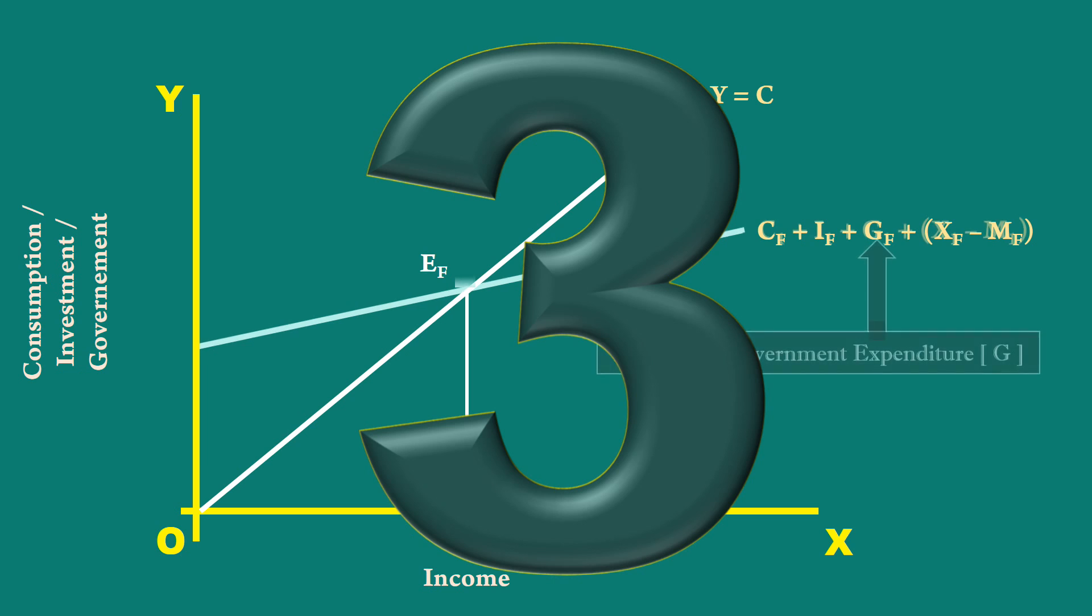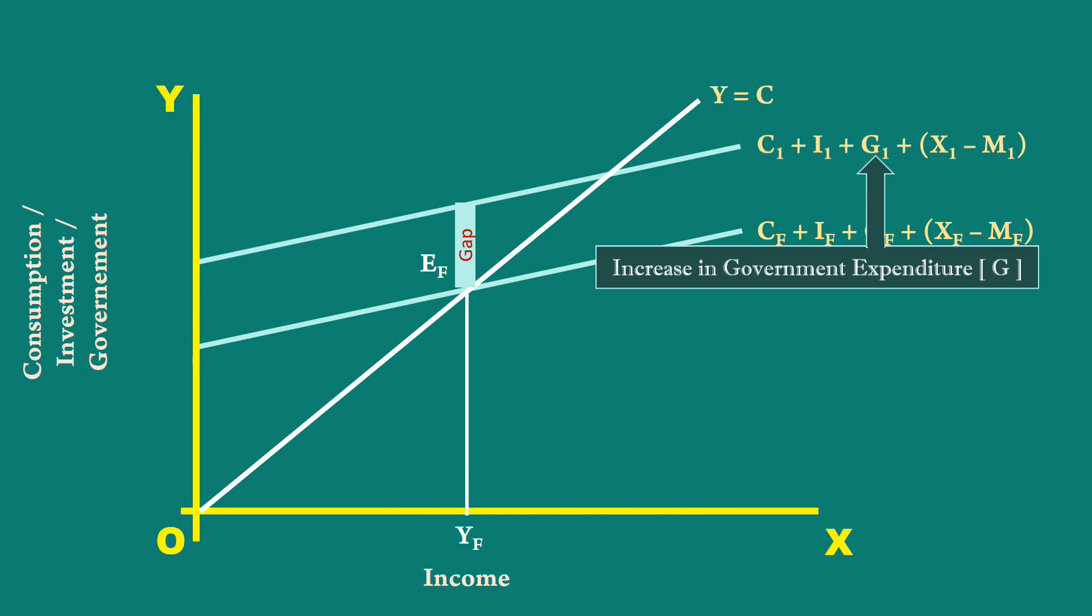3. If the government spends more, the curve will go up. It will create a gap between aggregate demand and aggregate supply.